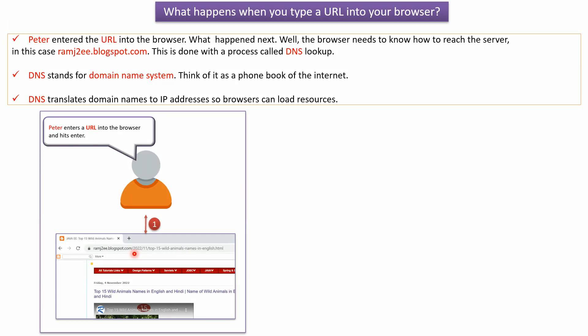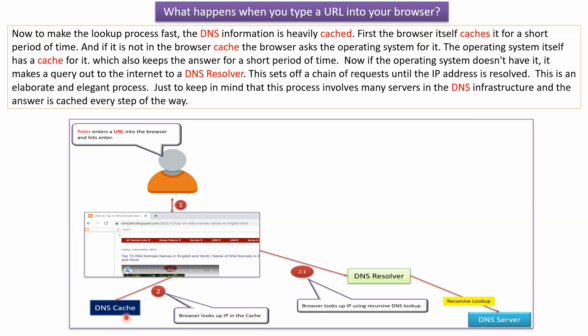Peter entered the URL into the browser — what happens next? The browser needs to know how to reach the server, in this case ramj2e.blogspot.com. This is done with a process called DNS lookup. DNS stands for Domain Name System — think of it as the phone book of the internet. DNS translates domain names to IP addresses so browsers can load resources. To make the lookup process fast, the DNS information is heavily cached.